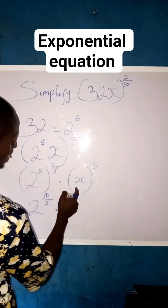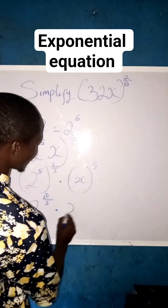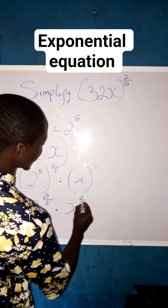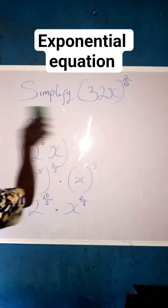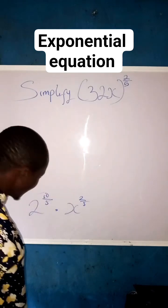Then times x here, x raised to power 2 all over 5. 2 all over 5.